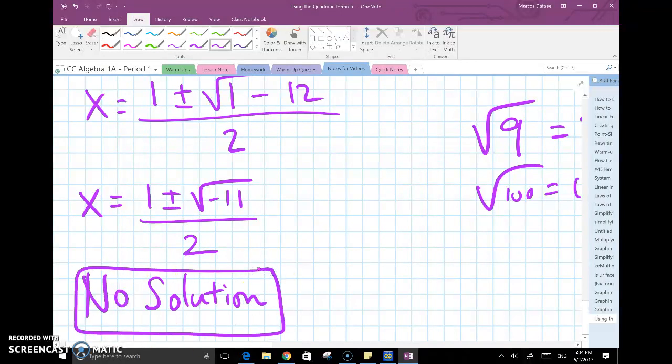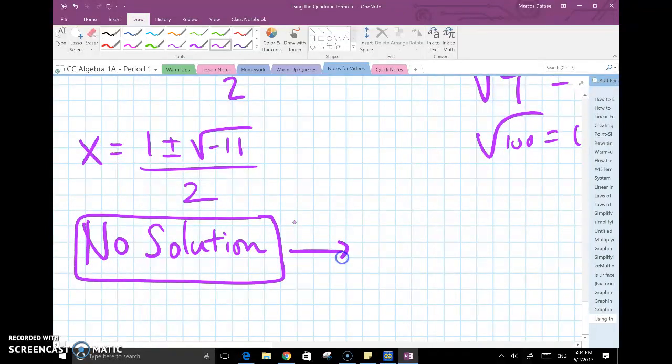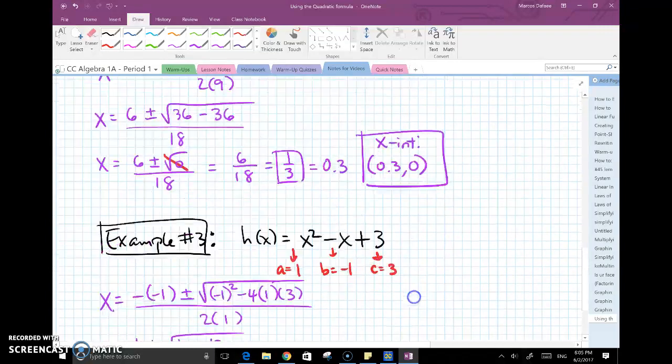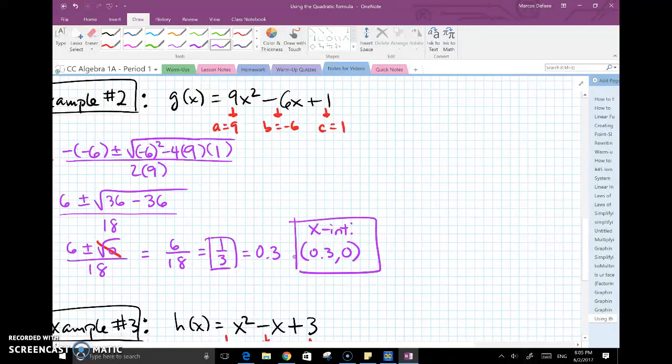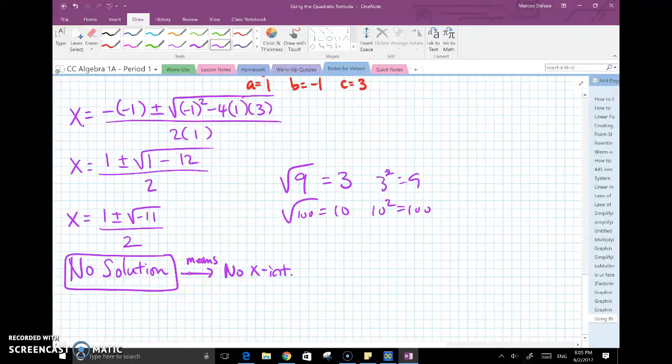And when you write that there is no solution for a quadratic formula, what you're also saying is that there is no x-intercept. So we saw three cases where we have results: the first one being two x-intercepts or two solutions, the second one where we have only one solution or one x-intercept, and the third case where we have absolutely no solution or no x-intercepts. And again, the reason is because of this. This can't be done. It stops everything.